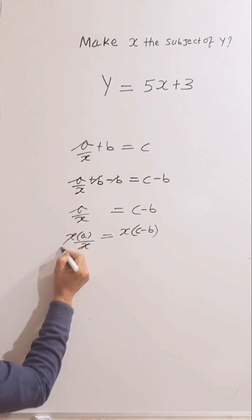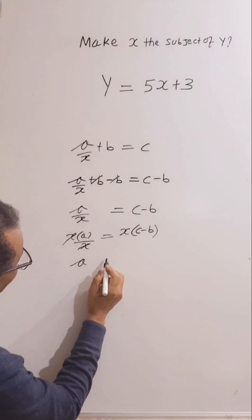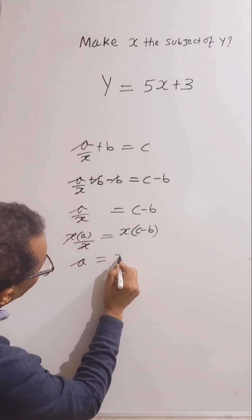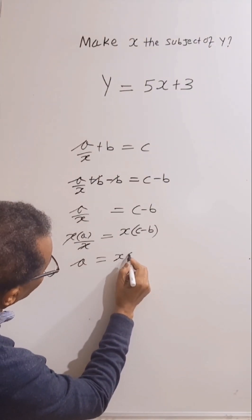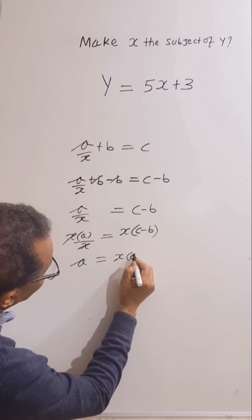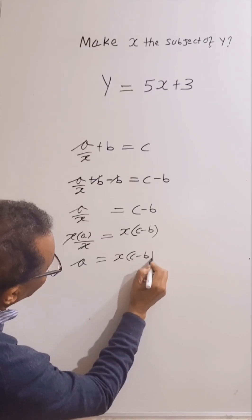Again, this and this will cancel. So A left, A equal x times C, take away B.